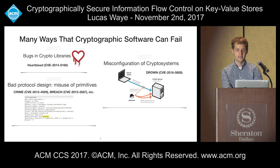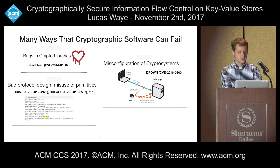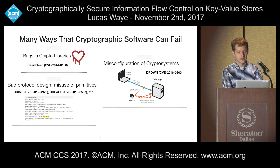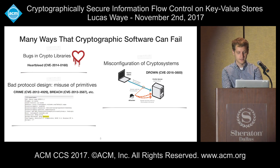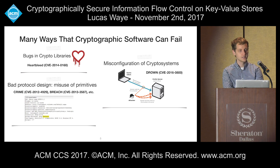There are many other ways that cryptographic software can fail beyond just leaking your private key. One well-known way is when the underlying crypto libraries that an application uses has a bug in it, like with Heartbleed. But there can also be more subtle bugs where all of the crypto primitives themselves are implemented correctly but are composed together in a way that leaks information.